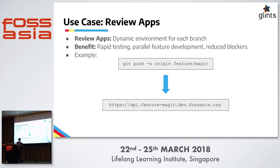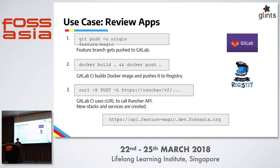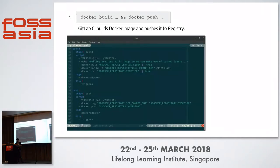For those who have used Heroku or similar platform-as-a-service implementations, they might provide this as well, but you get locked into one single vendor. To implement this, you need some version control system. A feature branch gets pushed to GitLab, then you configure your CI system to build a Docker image and push it to a registry. After that, you also use the CI system to call the Rancher API, and that's where you create new stacks and services. In the Docker build process — we use GitLab internally — you build an image, tag it with the appropriate version, and push it.